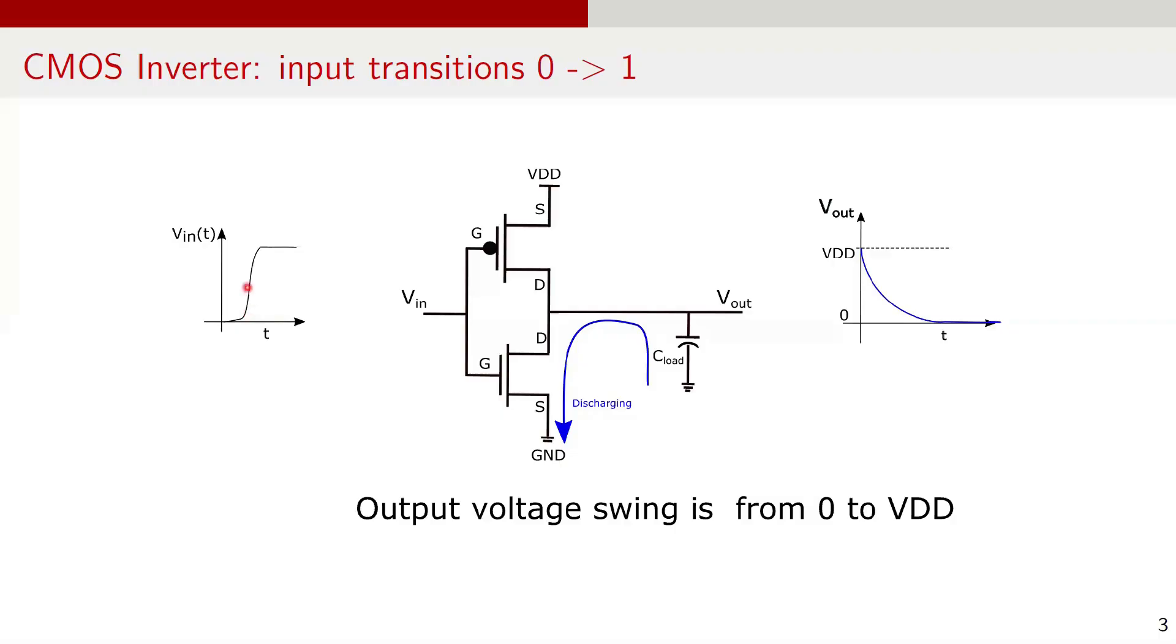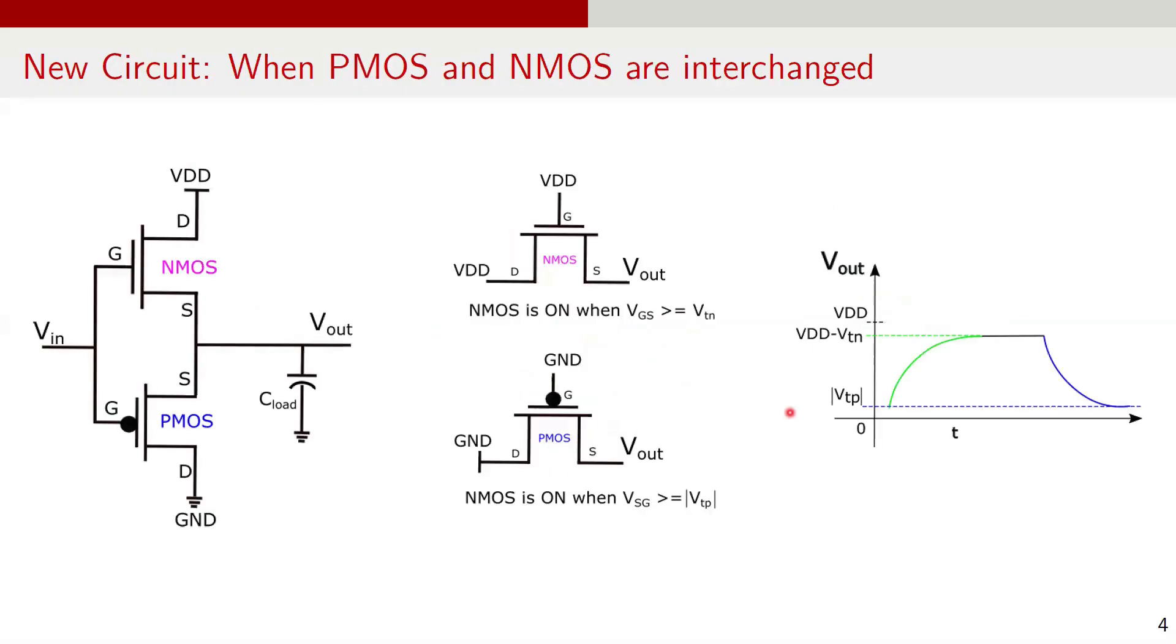Conversely, when the input transitions from 0 to 1, the NMOS turns on while the PMOS gradually turns off and the capacitor C load discharges to the ground through the NMOS. The waveform shows the output node Vout transitioning from VDD to 0. Thus, the inverter circuit inverts the input signal and the output range for the circuit is from 0 to VDD.